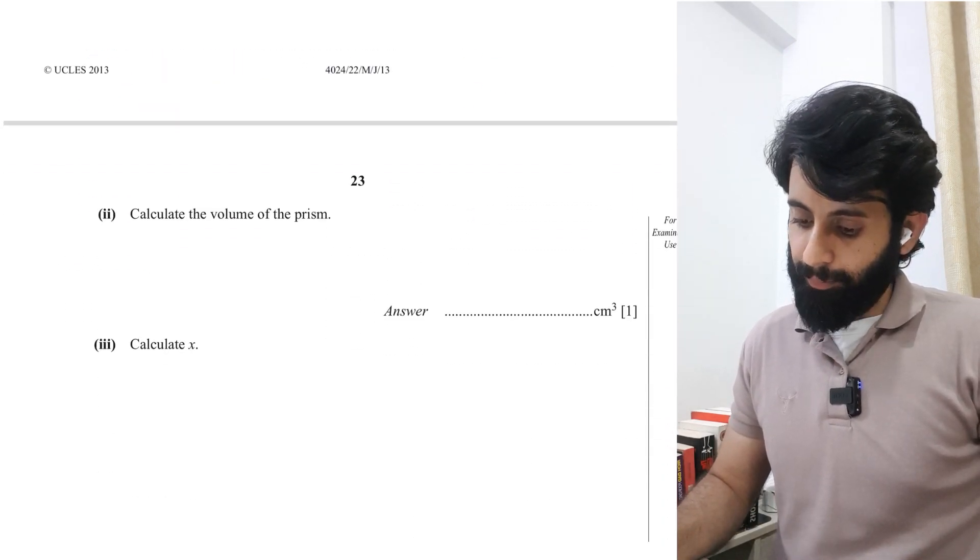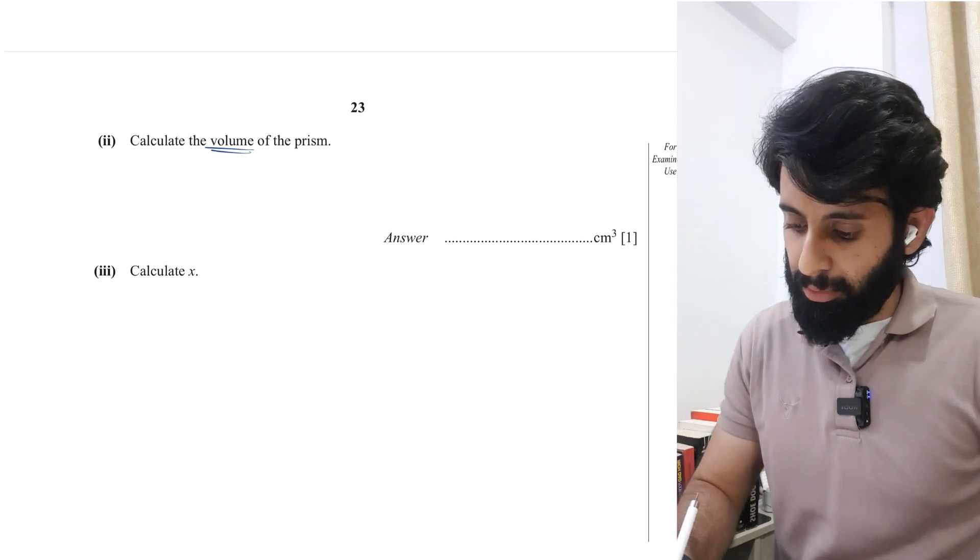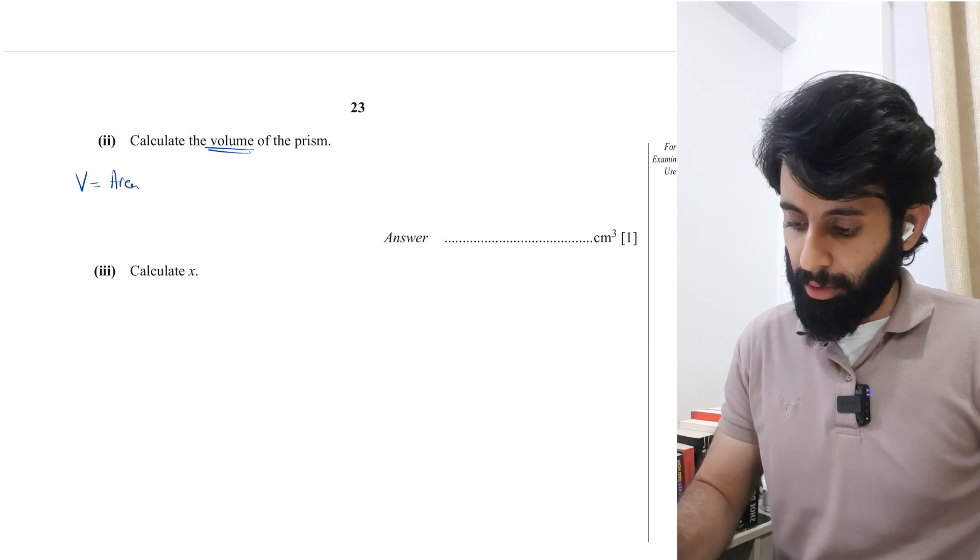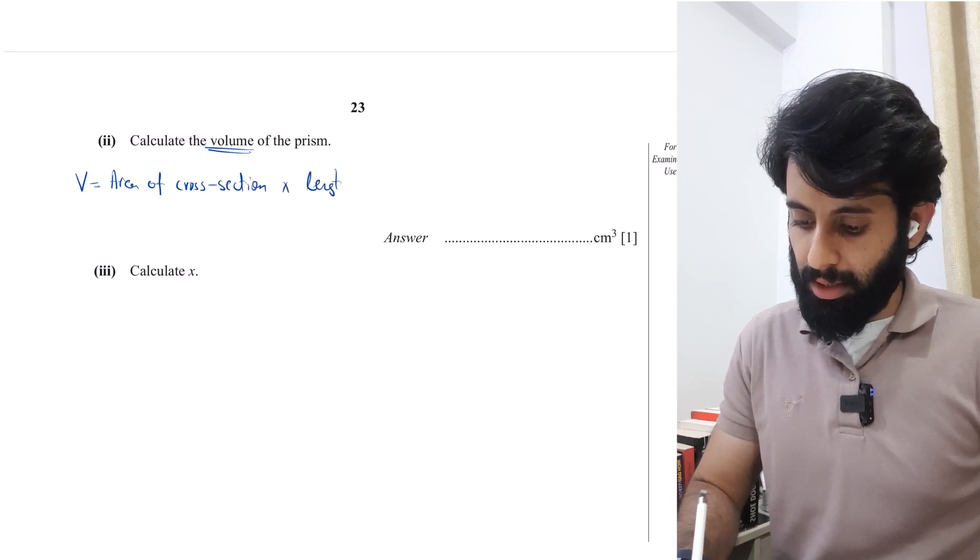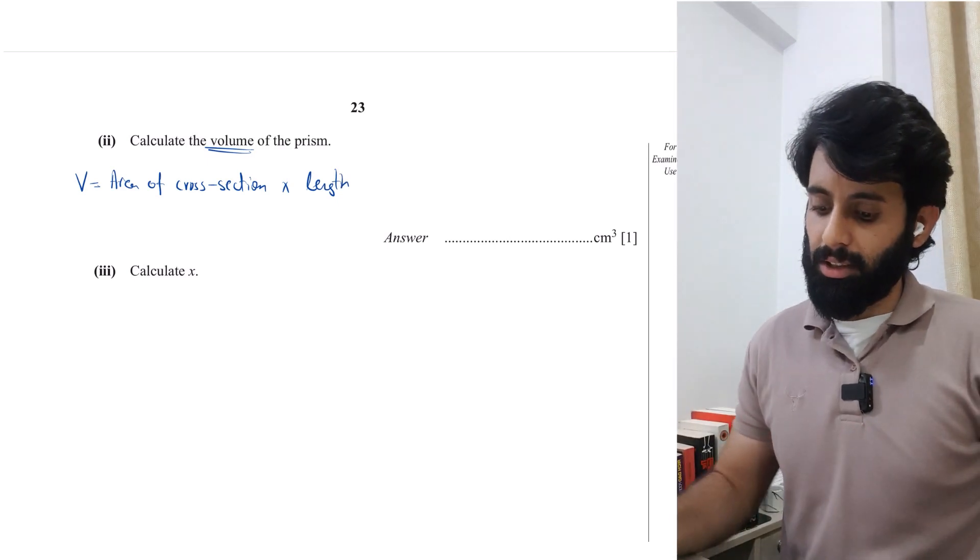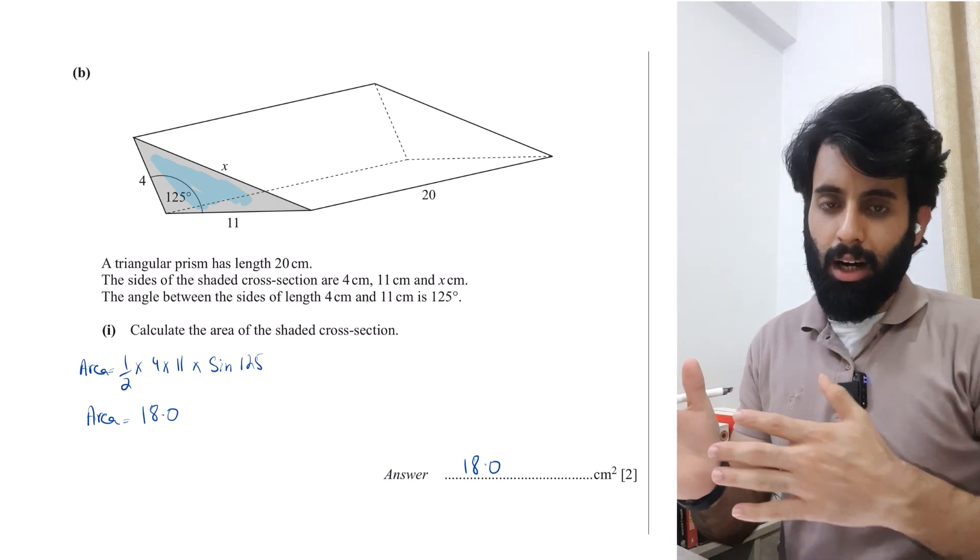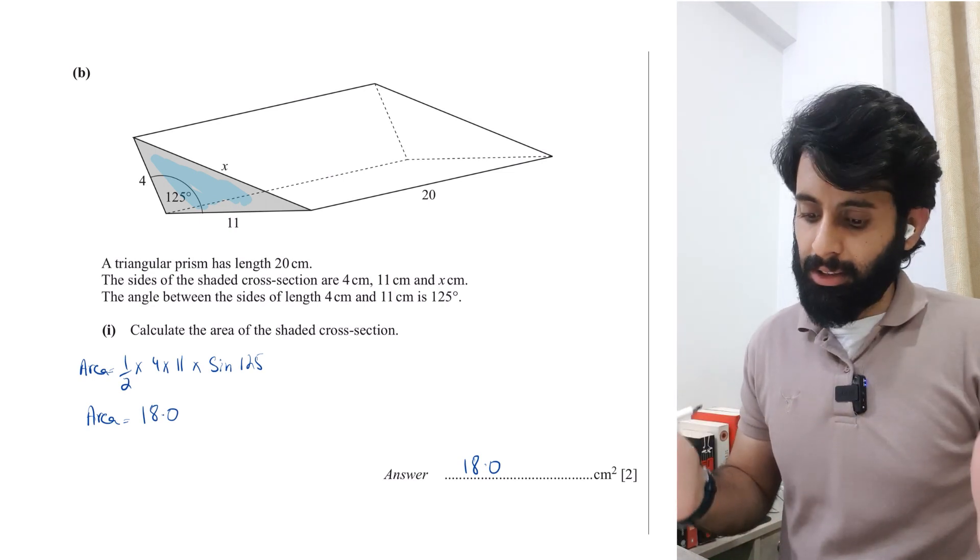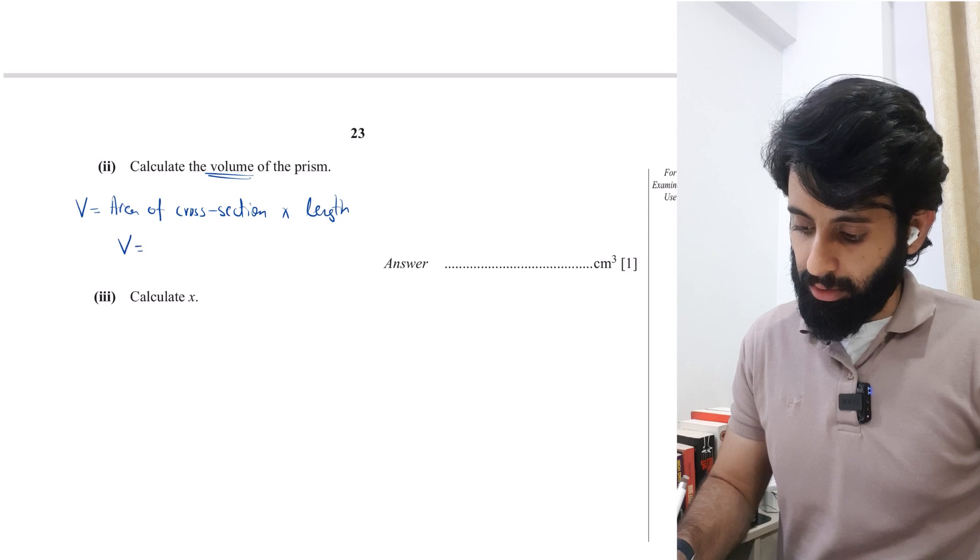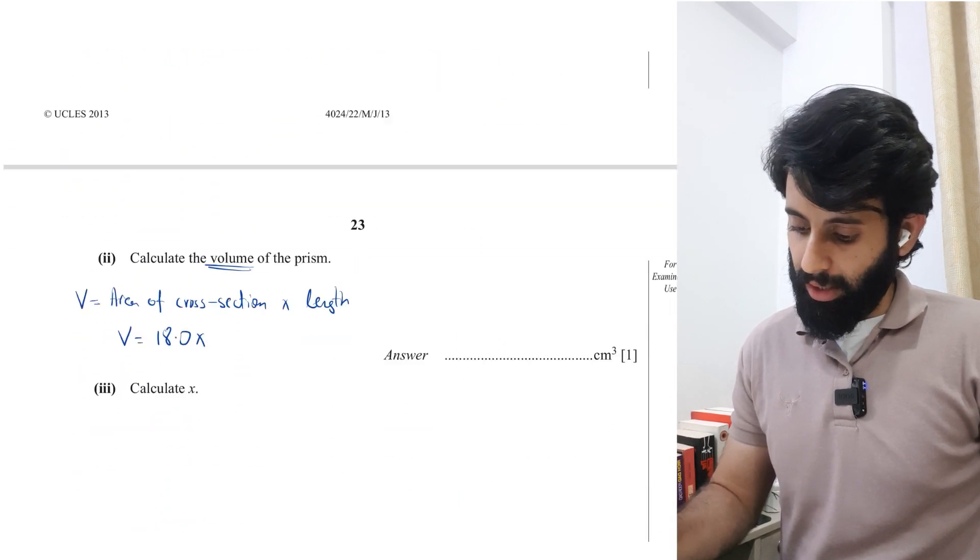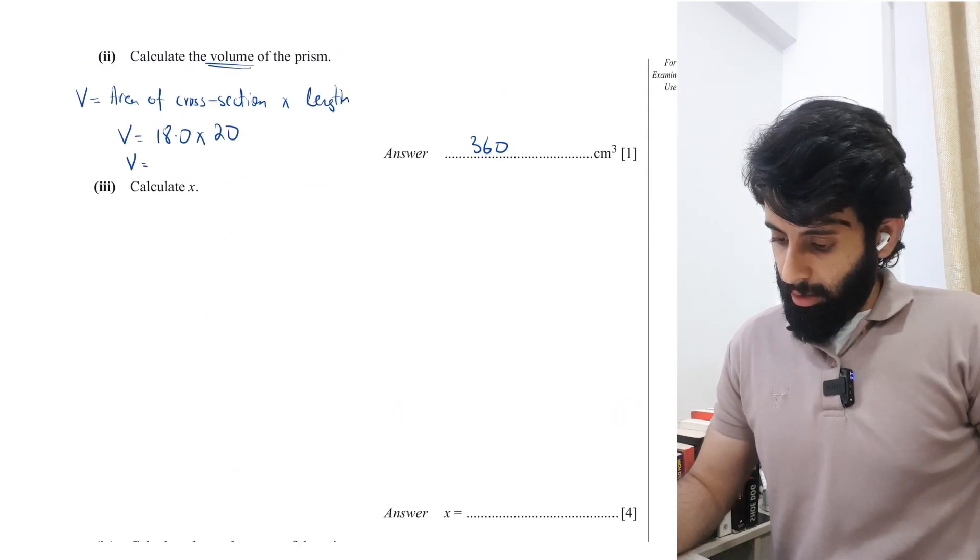Volume of the prism - I was hoping this is going to be the next part. So basically you have a prism. The formula that I prefer to use is area of cross section times length. A lot of students tend to confuse that - normally it's base area times height, how come it's area of cross section times length? This makes things easier because you have the cross section, that's right over here. Length is basically the perpendicular distance between the two identical faces, which in this case happens to be 20. We have the area, that's 18.0 multiplied by 20, so 360, which is the correct answer.